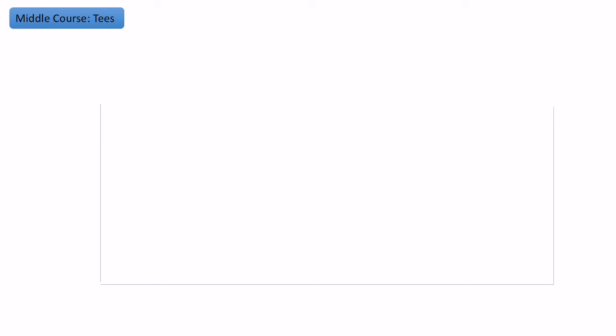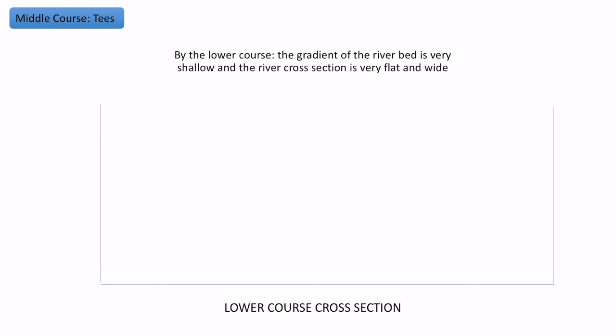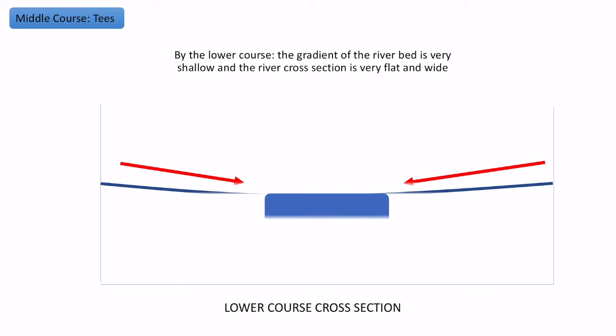In terms of the cross section of the valley, the gradient of the bed is almost flat and the river cross section is very flat and wide — an even more elongated U-shape, almost completely flat. In some rivers, though not necessarily the Tees, you would also get a flood plain occurring on either side of the river.